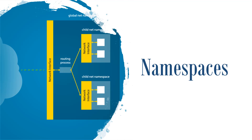Today, I'm going to talk about namespaces in Linux. Namespaces enable creating an abstraction of a particular global system resource and make it appear as a separated instance to processes within a namespace. Several processes from different namespaces can use the same resource simultaneously without creating a conflict. Changes made to the global resource in one namespace are visible to the processes which are members of that namespace, but are invisible to other processes outside the namespace.